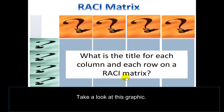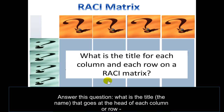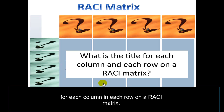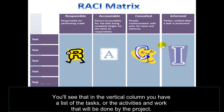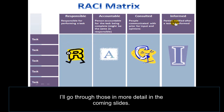Take a look at this graphic — I've put question marks where the headings for the columns and rows go. What is the name that goes at the head of each column and row on a RACI matrix? In the vertical column you have a list of the tasks or activities and work done by the project. Across the horizontal, you have the RACI: Responsible, Accountable, Consulted, and Informed. I'll go through those in more detail in the coming slides.